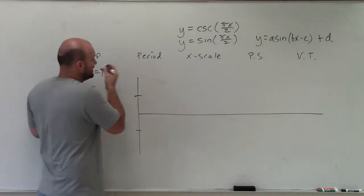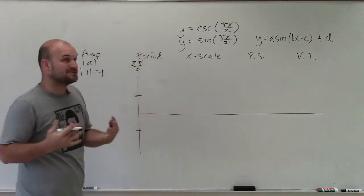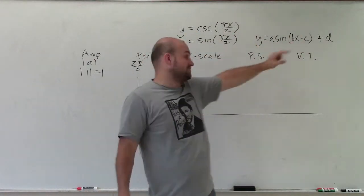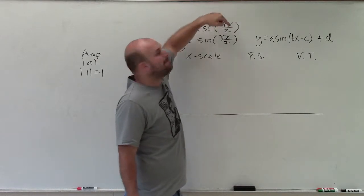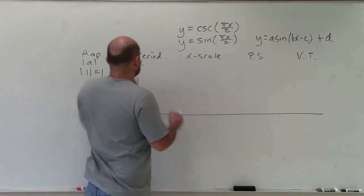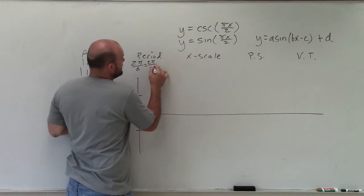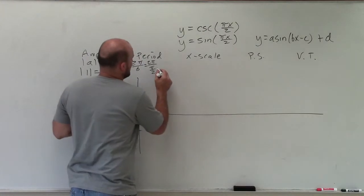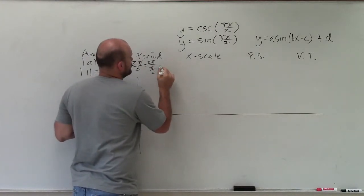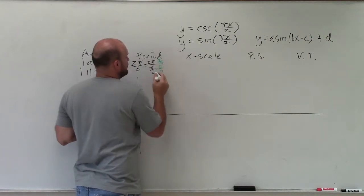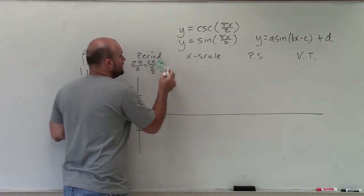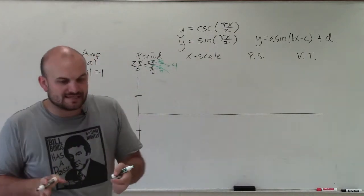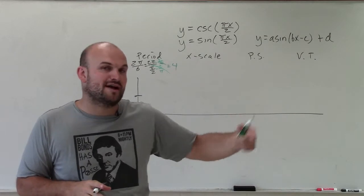The next thing is the period. Period is 2π divided by b. Now b represents the number being multiplied by x — here you can see that's π divided by 2. So the period is 2π divided by π/2. To simplify that, we multiply by the reciprocal, which is 2 over π. The π cancels out and I'm just left with a period of 4. So it's going to take 4 units for my graph to repeat itself.